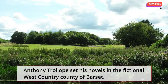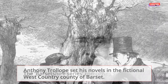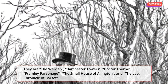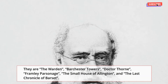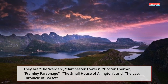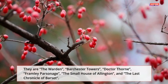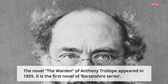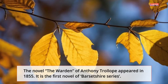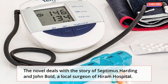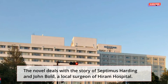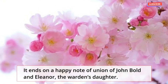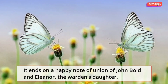Anthony Trollope set his novels in the fictional West Country county of Barset. The Barsetshire series comprises six novels: The Warden, Barchester Towers, Dr. Thorne, Framley Parsonage, The Small House at Allington, and The Last Chronicle of Barset. The Warden appeared in 1855 and is the first novel of the series. It deals with the story of Septimus Harding and John Bold, a local surgeon of Hiram's Hospital, and ends on a happy note of the union of John Bold and Eleanor, the warden's daughter.